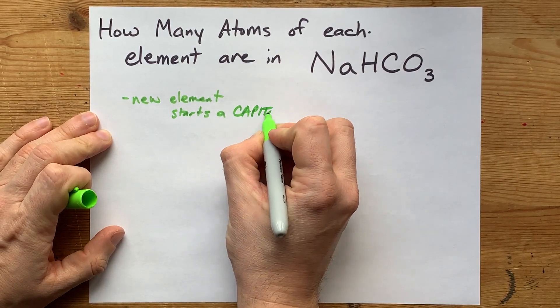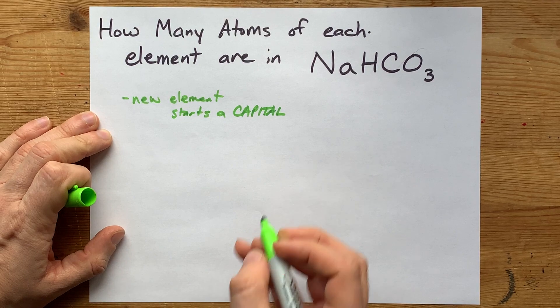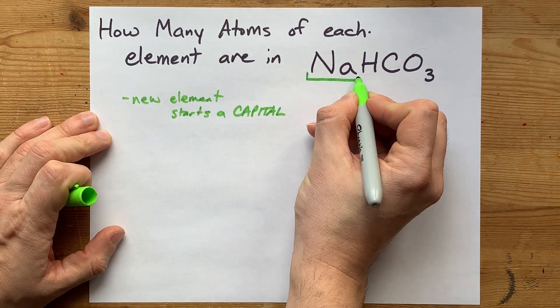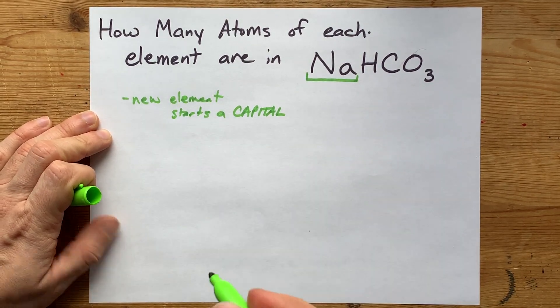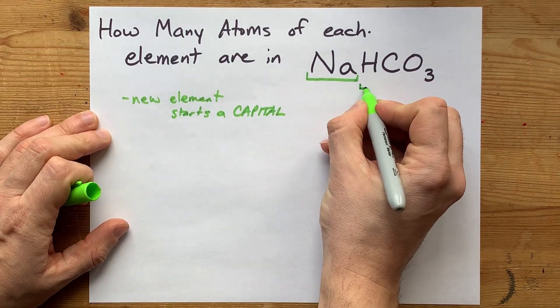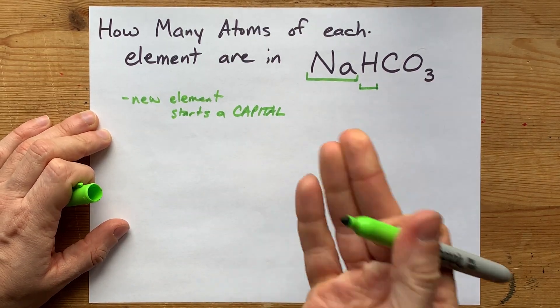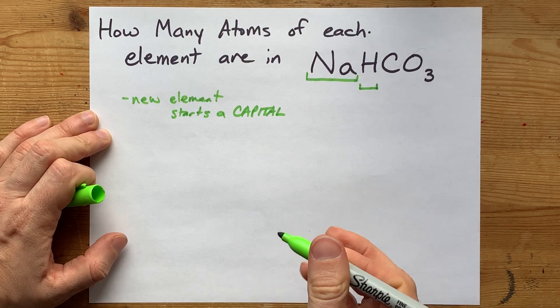Capital letters are the ones that we say are in uppercase. Na is a single element here - that's a sodium atom. Capital H is its own element here - that happens to be hydrogen.